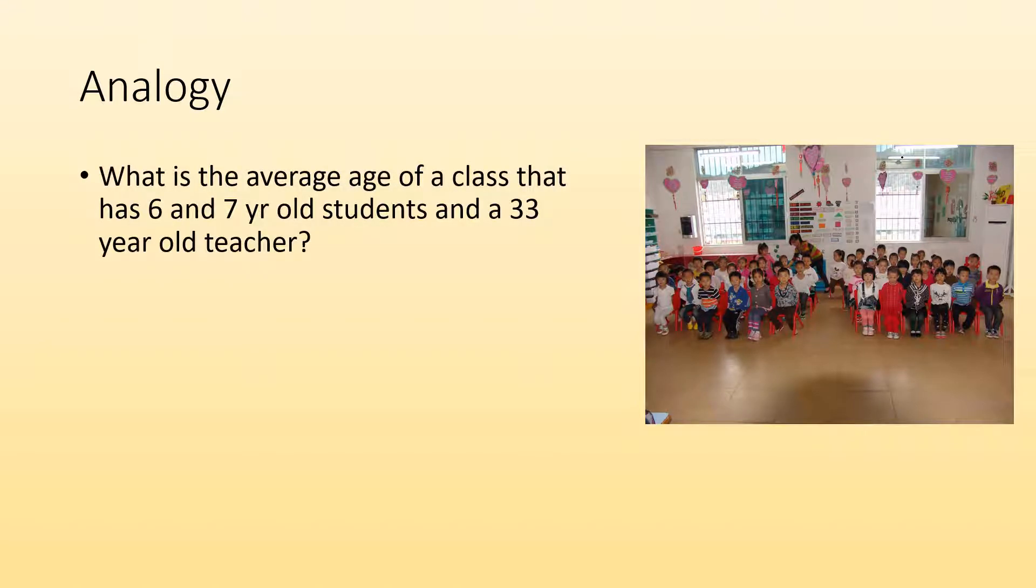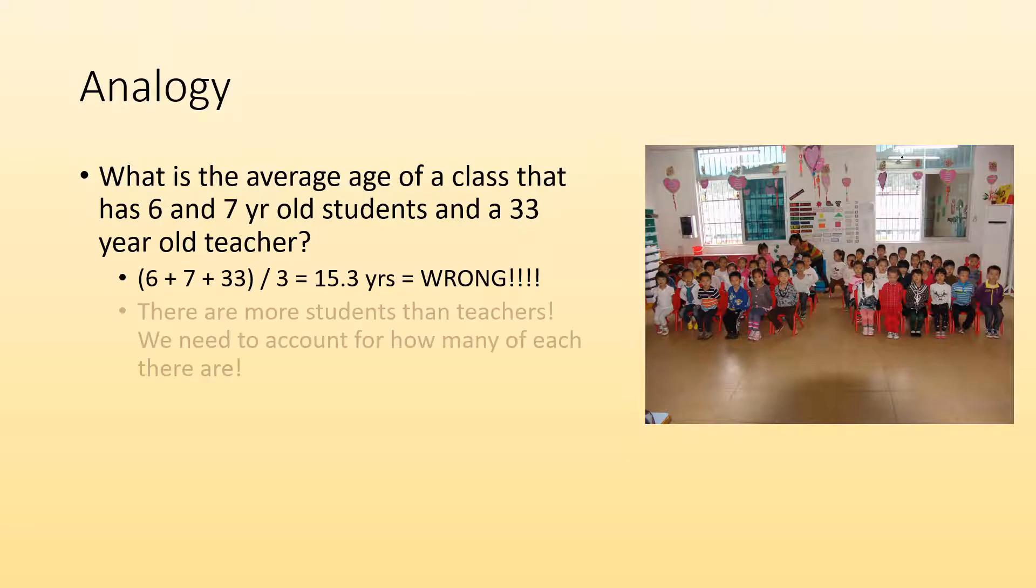What is the average age of a class that has six-year-olds, seven-year-olds, and a 33-year-old teacher? You wouldn't just go 6 plus 7 plus 33 and divide by three and get 15.3 years. That's not the right way to do it. And why isn't it? You could probably feel it in your gut that that's not right. There are more students than teachers.